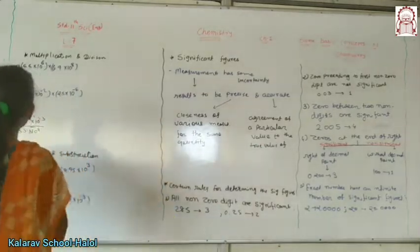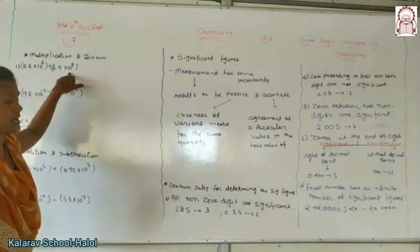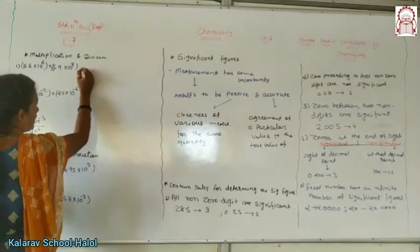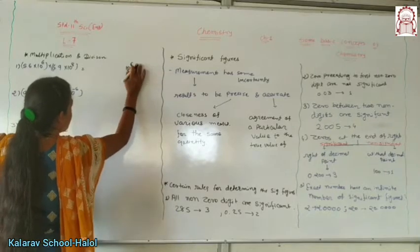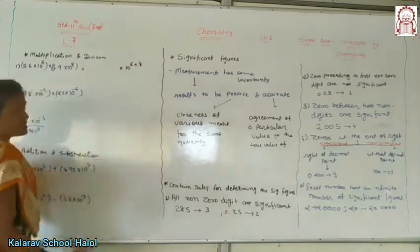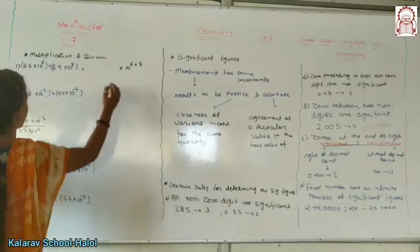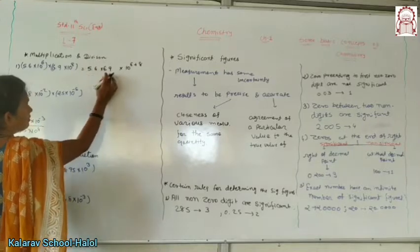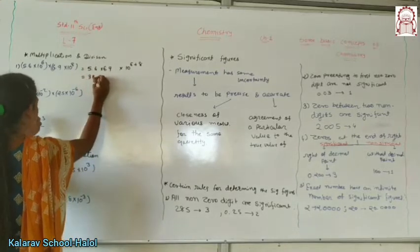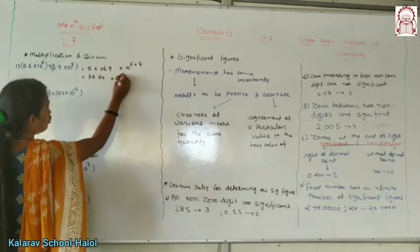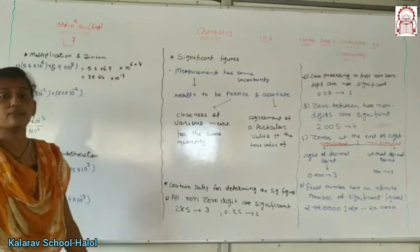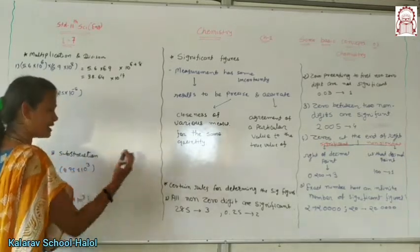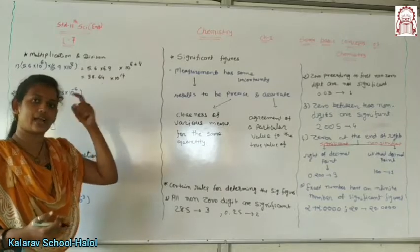Here we will do 5.8×10^(-26) × 6.9×10^(-28). For multiplication: 10^(-26) × 10^(-28). We take the same formula — a single formula. So 0.9 is the multiplication function and we have 1.64. We need to adjust to scientific notation. If we have to move the decimal point from right to left, then what will happen to the power? Addition will happen.